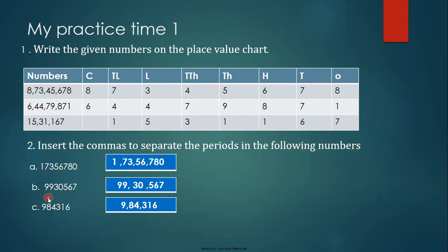One more example — a seven-digit number. Ones, tens, hundreds — one pair, you get a comma. Then thousands, ten thousands — comma. Then lakhs, ten lakhs. Next I have a six-digit number. Ones, tens, hundreds — one pair, you get a comma. Thousands, ten thousands — comma.